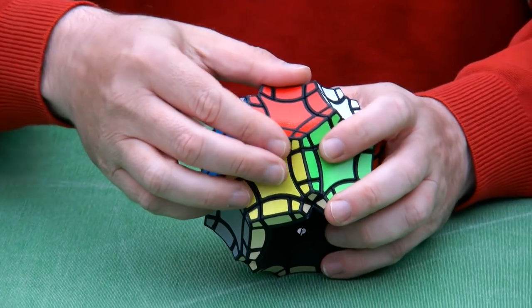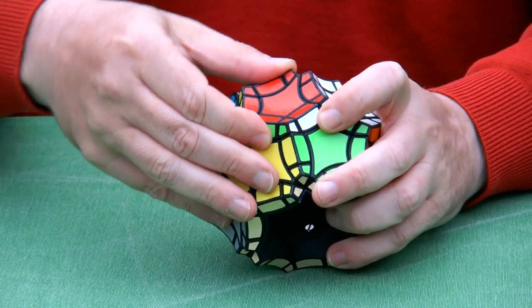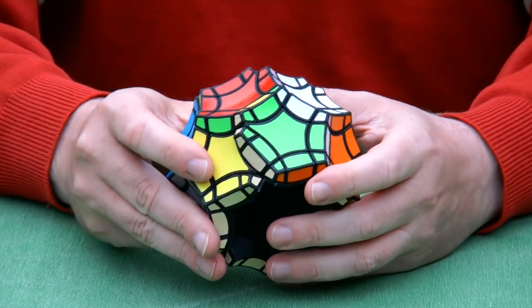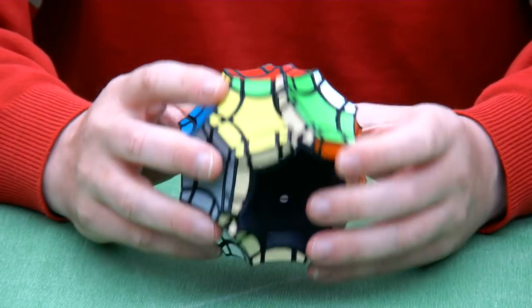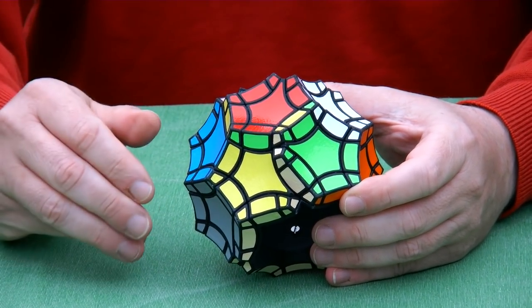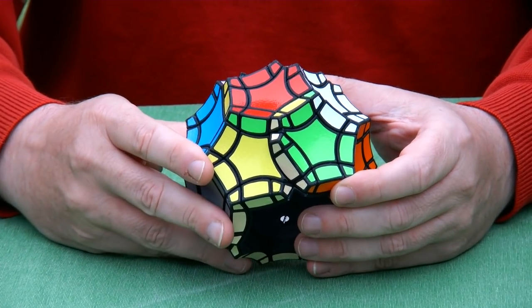And it turns like a regular twisty puzzle. It's a quasi-doctrinaire puzzle. You can very quickly turn it into its original state, but still it jumbles.